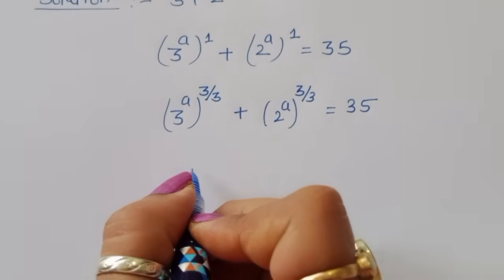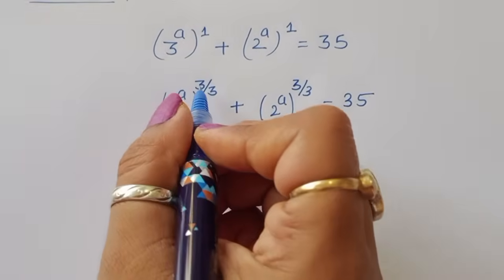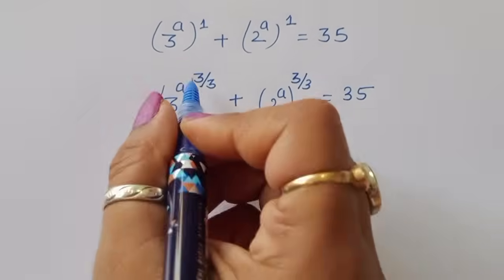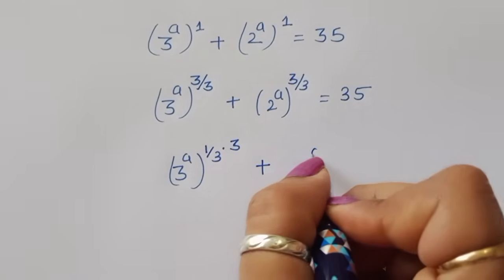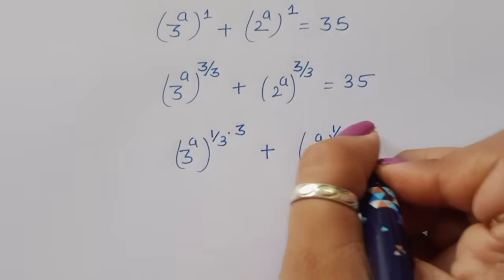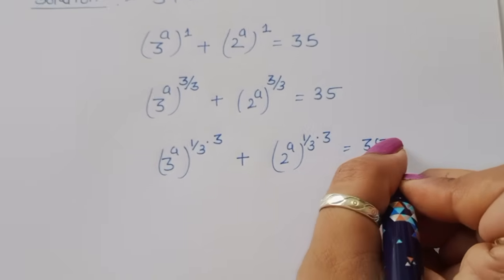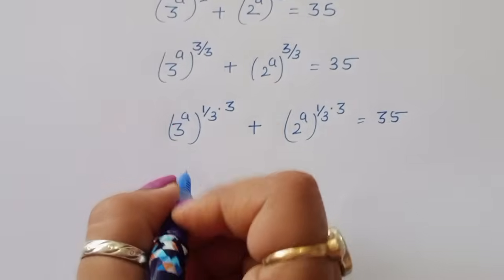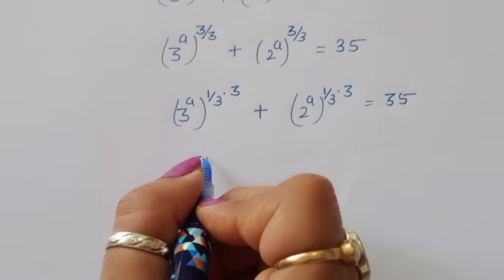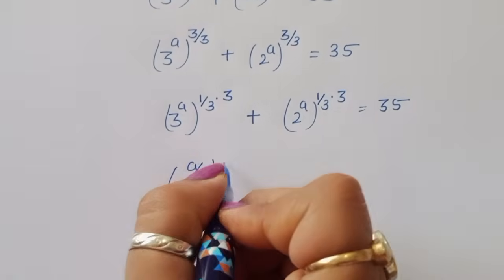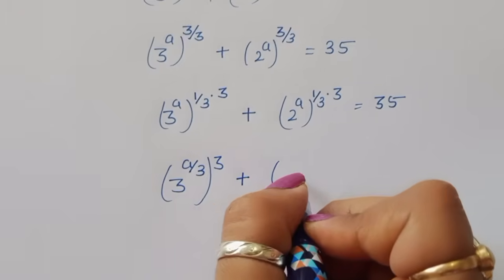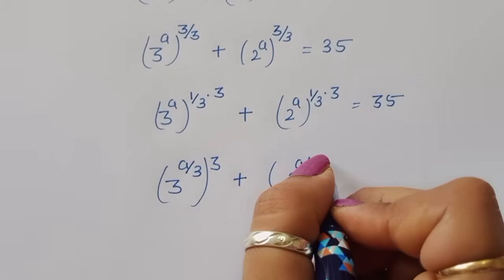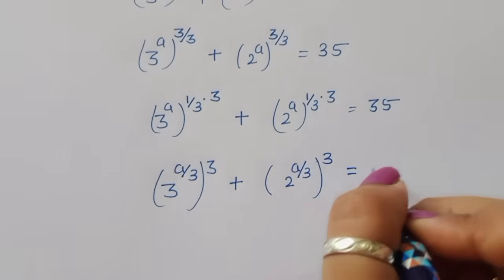Now separating the power: 3^(A×(1/3)×3) + 2^(A×(1/3)×3) = 35. Taking 1/3 inside the bracket, A×(1/3) becomes A/3. So we get 3^(A/3)^3 + 2^(A/3)^3 = 35.